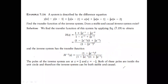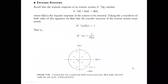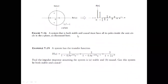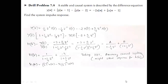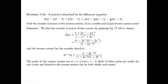To summarize: a system that is both stable and causal must have all its poles inside the unit circle. For this problem, there is also a zero at 1/2 and a zero at 1 — both inside the unit circle — so this is also a minimum phase system. The inverse system similarly has two poles and two zeros, all inside the unit circle, so it too is a minimum phase system.